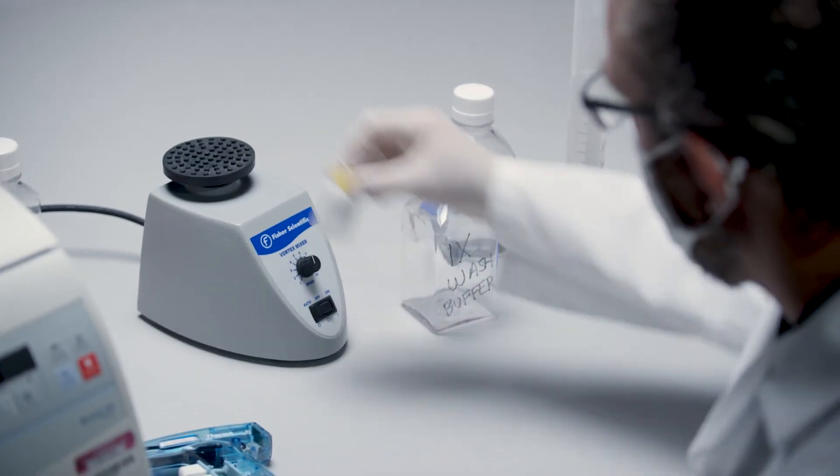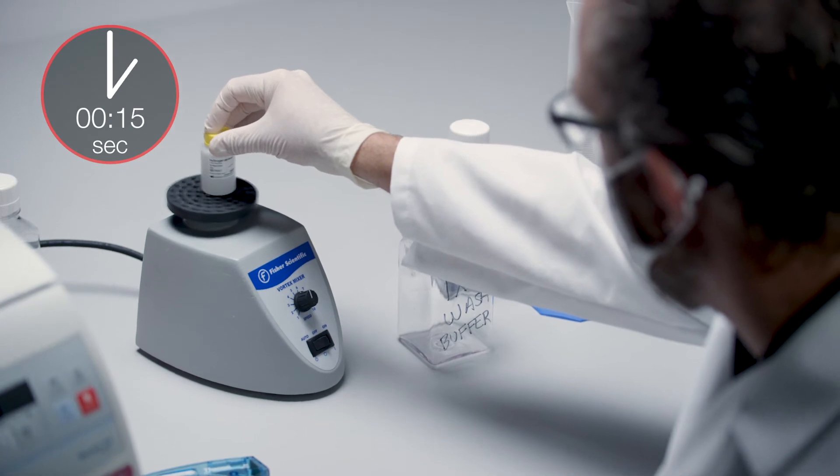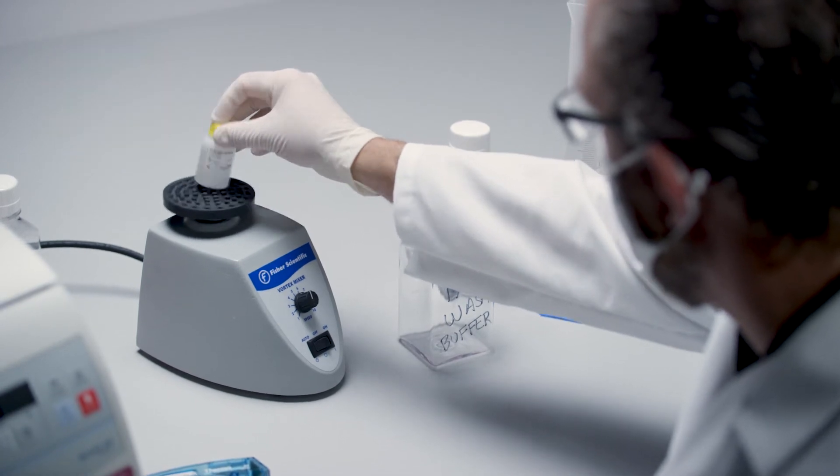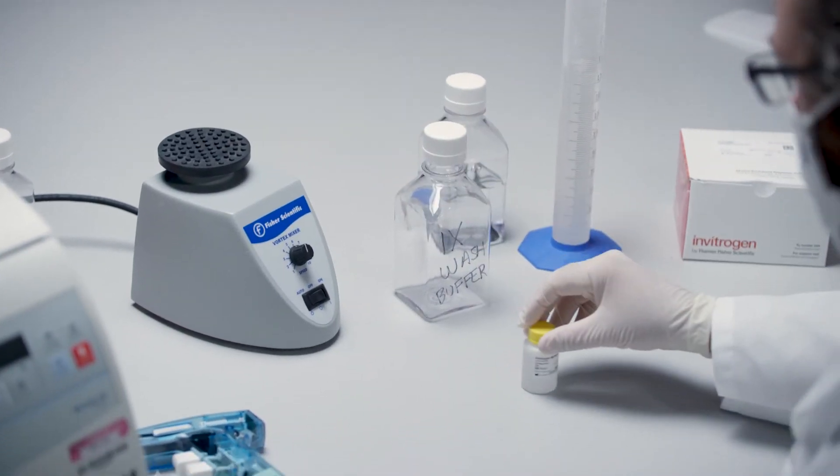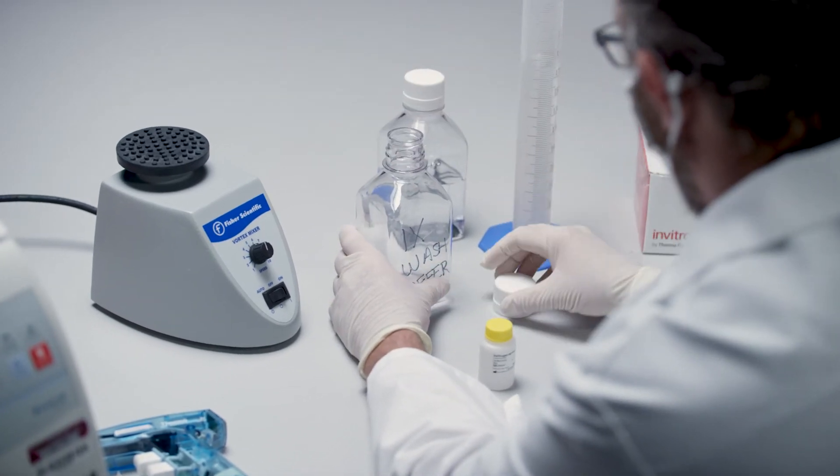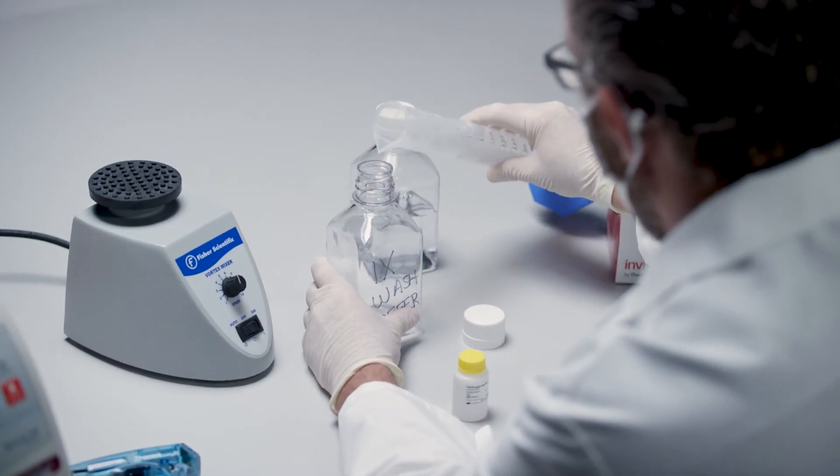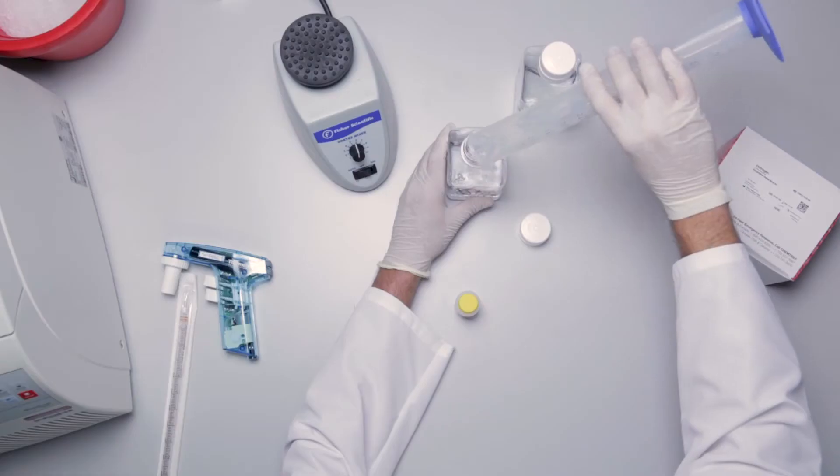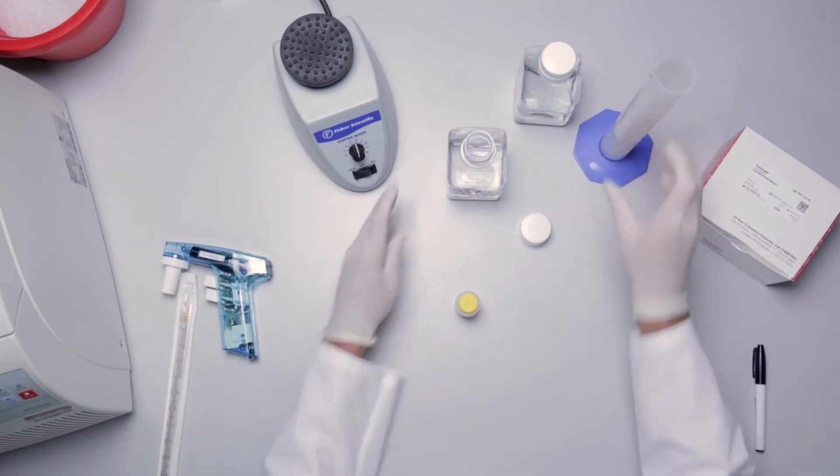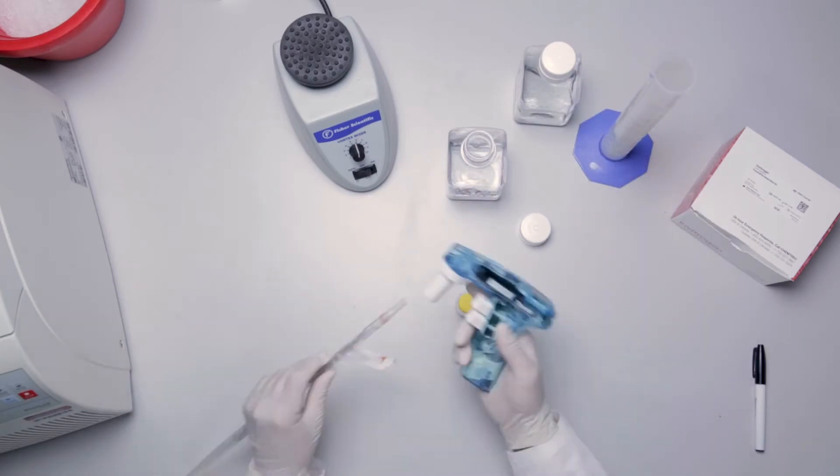Gently vortex the wash buffer concentrate for 15 seconds. Mix 20 milliliters of wash buffer concentrate with 180 milliliters of deionized water using a 200 milliliter graduated cylinder.